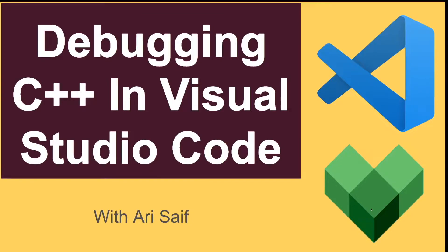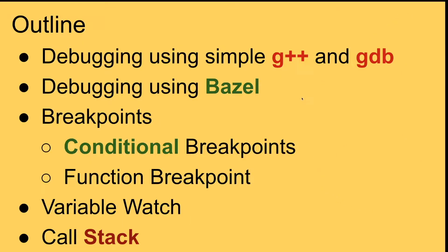Hello guys, welcome to this video. Today I'm going to show you how to use Visual Studio Code for debugging C++ programs. I will go over several topics: how to do debugging using the plain, vanilla G++ and GDB, how to set up Visual Studio Code for debugging with Bazel, which is a system for building C++ files, and how to use breakpoints, conditional breakpoints, functional breakpoints, variable watch, and call stack for your debugging.